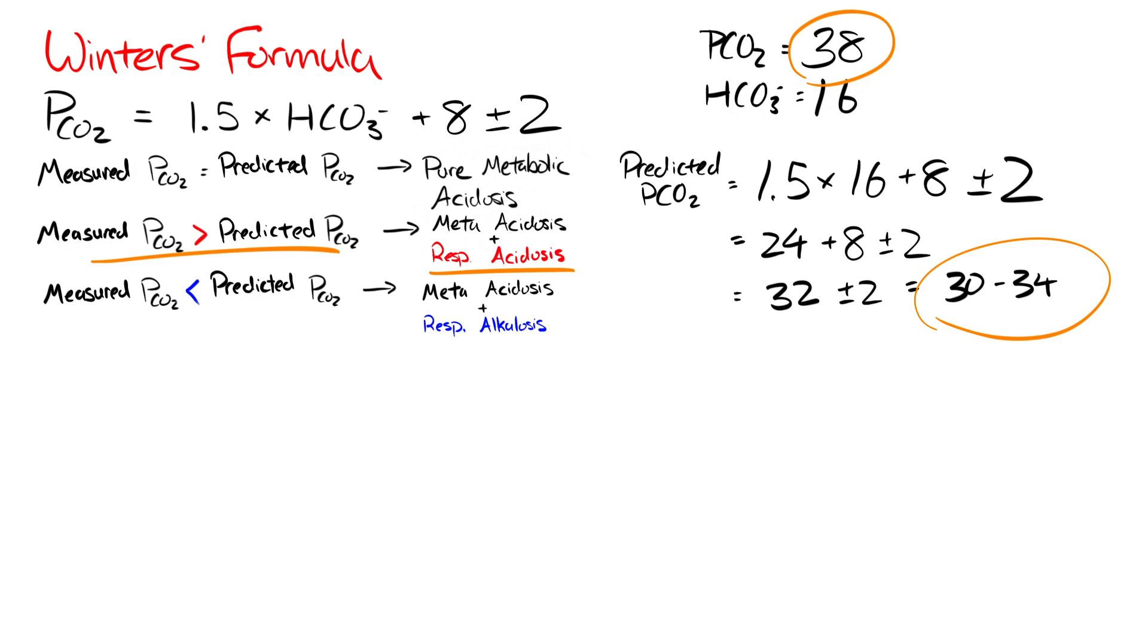The reason why we're using Winter's formula is that it's hard to just look at a pure PCO2 of 38 in a case of metabolic acidosis and off the bat say this is a respiratory problem. Instead, we needed to use Winter's formula to calculate the appropriate predicted respiratory compensation to analyze whether there was another primary respiratory pathology on top of that.